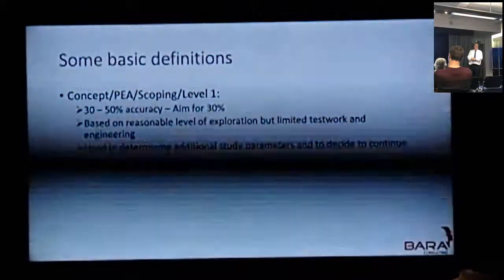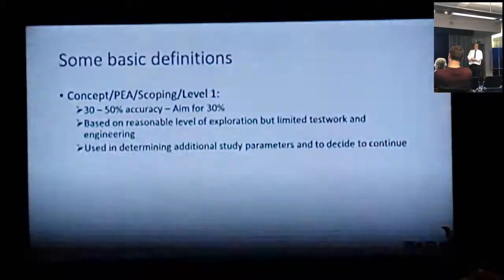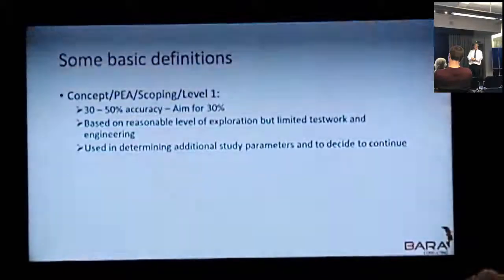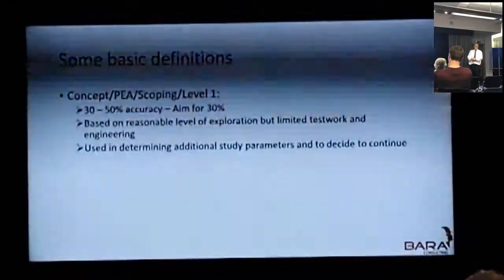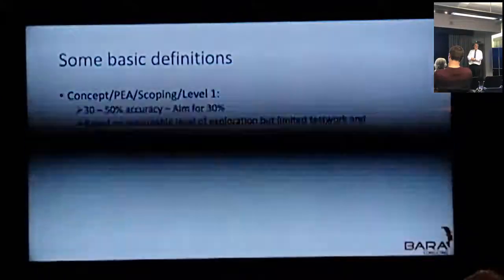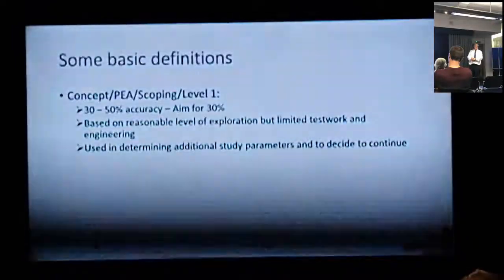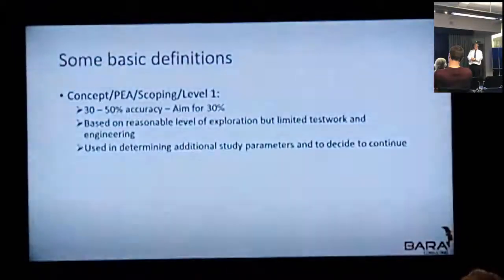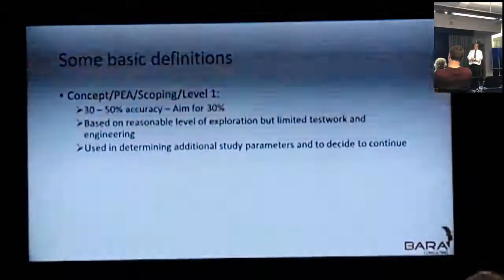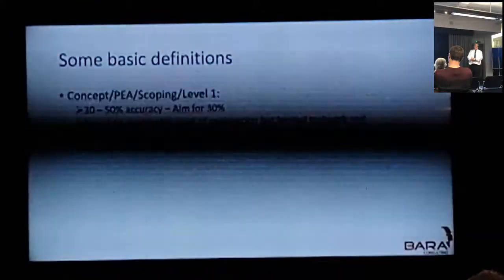Just very quickly going through some basic definitions. A concept study — also called a preliminary economic assessment, scoping study, or Level 1 — is typically within 30 to 50% accuracy. I would suggest the aim should be around 30%. It's based on a reasonable level of exploration and limited test work and engineering. The main reason for doing these studies is to determine additional study parameters and to decide whether to continue or not.